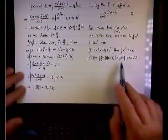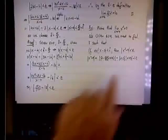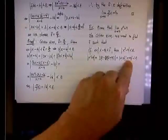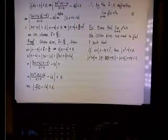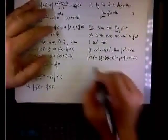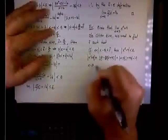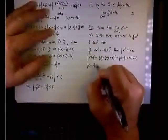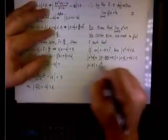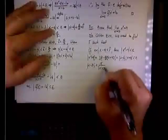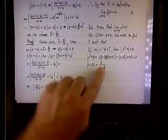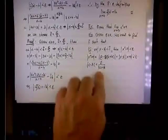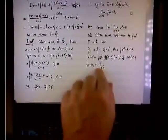Now, remember what we want — we want the absolute value of x minus 3, and we have it here, but we have excess baggage with x plus 3. So we have the absolute value of x minus 3 is less than epsilon divided by the absolute value of x plus 3, and I need to find a value for the absolute value of x plus 3 so I'll have a concrete value on the right side of the inequality.